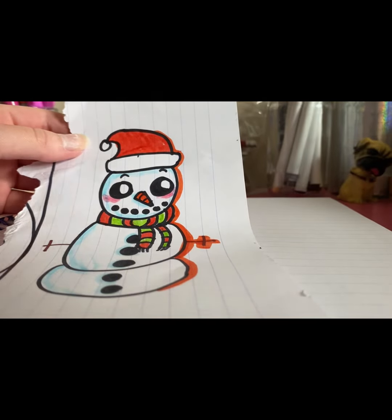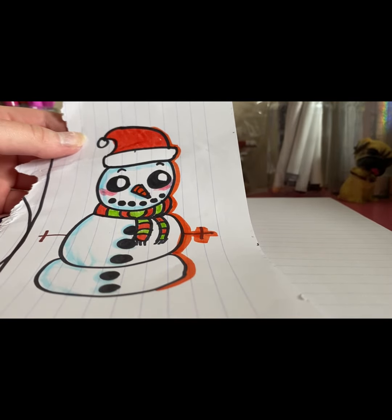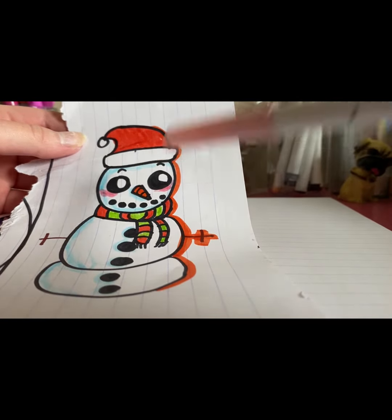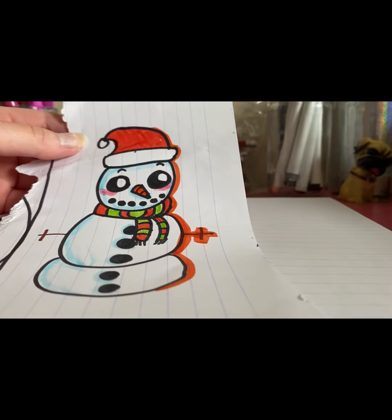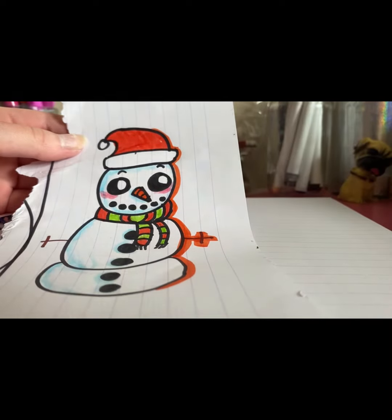Some blue. I actually decided to use the blue as like shadows for the snow. I used the pink for some blush, the brown for the arms, the orange for the nose, and for the outline on the right hand side.